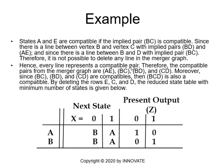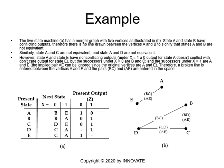As every line represents a compatible pair, the compatible pairs from the merger graph are: A, E; B, C; B, D; and C, D. Moreover, since B, C; B, D; and C, D are all compatible, then B, C, D is also compatible. By deleting rows E, C, and D, the reduced state table with the minimum number of states will contain only A and B. Under input x=0 the next state is B, and under x=1 the next state is A, with two different outputs: 1, 0 and 0, 1. The merger graph is a visual means that allows us to reduce the state table to a minimum number of states, and here we ended up with two states: A and B.